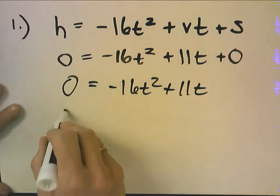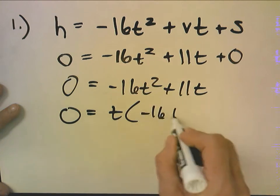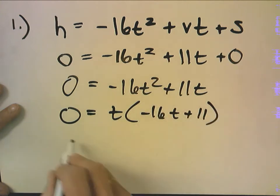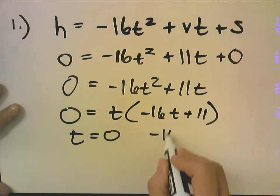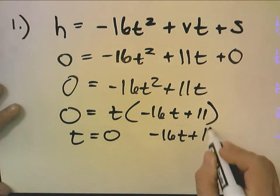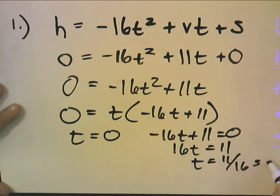To solve this I'm going to factor out my t and I get t times negative 16t plus 11. So t either equals zero or negative 16t plus 11 equals zero, which means 16t equals 11 and t equals 11 sixteenths of a second.